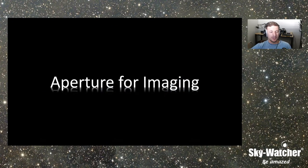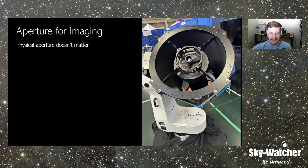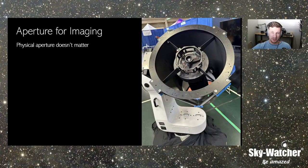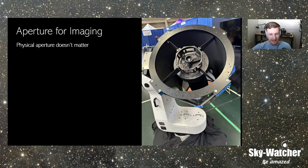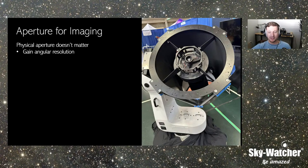Now let's jump over to imaging — this is where everything gets flipped around. In imaging, physical aperture is not the goal. What aperture gives us in imaging is angular resolution — we can get smaller, finer details with larger aperture. That's what we're gaining. But in photography, it's all about speed.